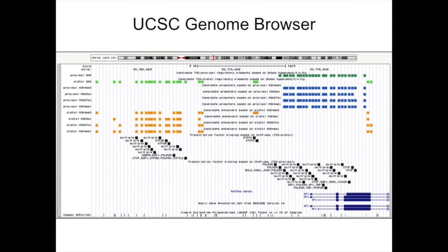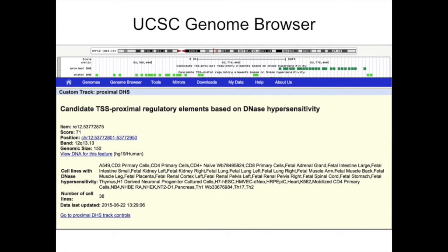This is a quick visualization of what these tracks look like on the UCSC genome browser. You have a gene with the transcription start site. On the top is proximal regulatory elements in dark green; in light green we have distal regulatory elements; and then we have candidate promoters, each track representing enrichment in a different histone mark. Candidate enhancers are distal regulatory elements annotated with histone marks, each line showing a different enrichment. You also have all the transcription factor data intersected with the regulatory elements, both proximal and distal. Clicking on a proximal element shows which cell types and tissue types went into creating that master peak.